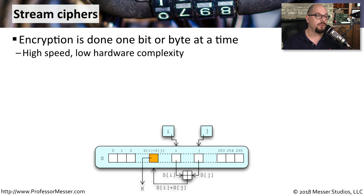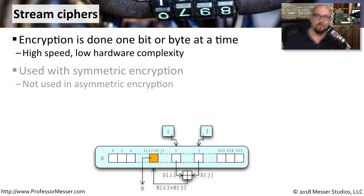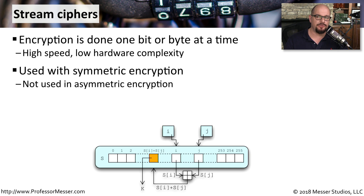With a stream cipher, the encryption is done one bit or one byte at a time. This is encryption that is considered to be high speed, and it can be done on hardware that doesn't require a lot of complexity. We commonly use symmetric encryption for stream ciphers. We don't usually use asymmetric encryption because of the overhead that's required.